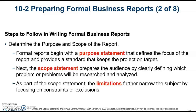The steps to follow in writing a formal business report: first, determine the purpose and scope of the report. A purpose statement defines the focus of a report and provides a standard that keeps the project on target. A scope statement prepares the audience by clearly defining which problem or problems will be researched and analyzed. Limitations, as part of the scope statement, further narrow the subject by focusing on constraints or exclusions. The textbook provides the following example of a purpose statement.